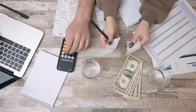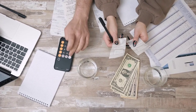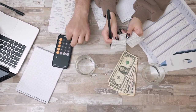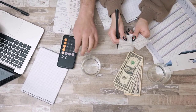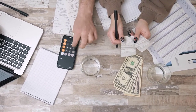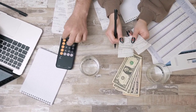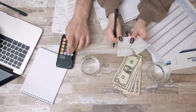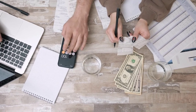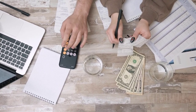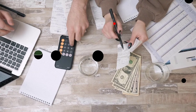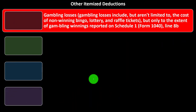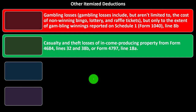Can I deduct gambling losses? The general answer is you're not going to get the full benefit. You can deduct gambling losses up to the point of gambling winnings reported, but they're reported on Schedule A as itemized deductions, so you only get a benefit if all itemized deductions together are greater than the standard deduction.